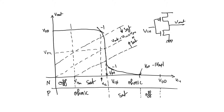We can see qualitatively that the noise margins for the CMOS inverter are actually quite high, because V-output-high is VDD and V-output-low is zero volts, so there is no headroom wasted on either side. We can also see that the transition region — the high-gain region where the slope is greater than one — is actually quite small, because the value of V-input-high is low and the value of V-input-low is high, making the transition region a relatively narrow region of the VTC.